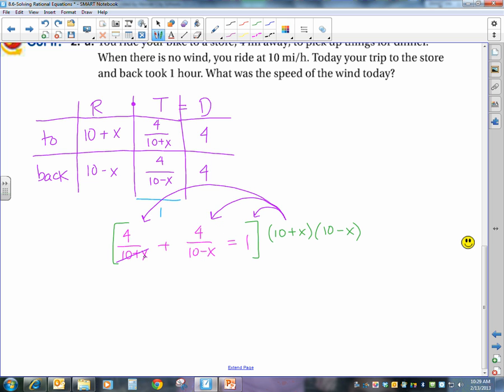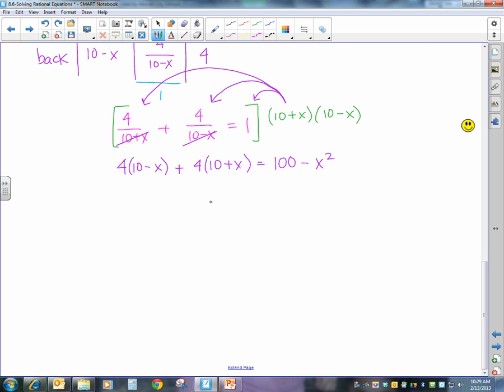Okay, so my 10 plus x cancels, leaving me with 4 times 10 minus x. My 10 minus x cancels, leaving me with 4 times 10 plus x. And hopefully you recognize that's a plus b, a minus b, which is a squared minus b squared. So let's continue to solve, and we get 40 minus 4x plus 40 plus 4x equals 100 minus x squared.